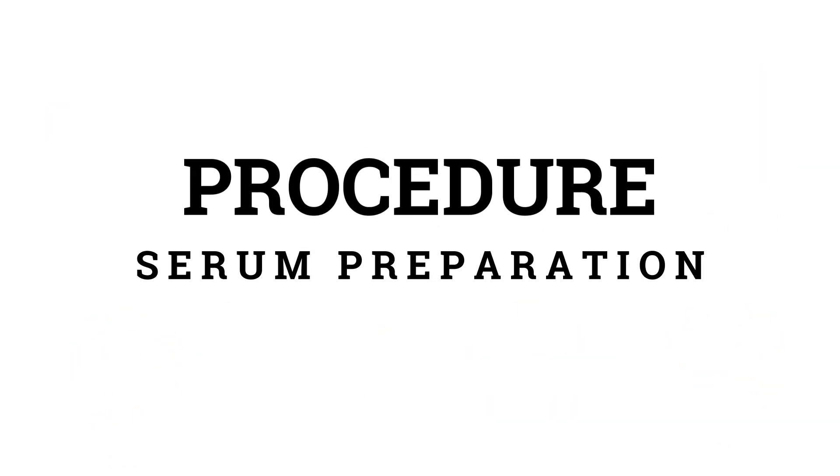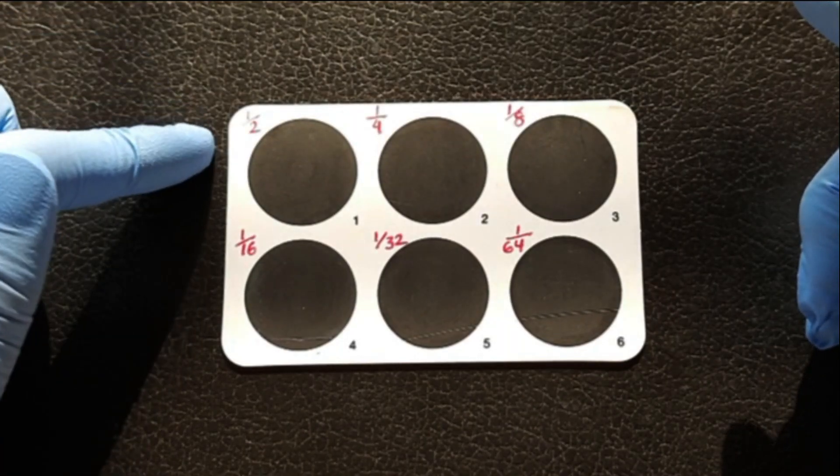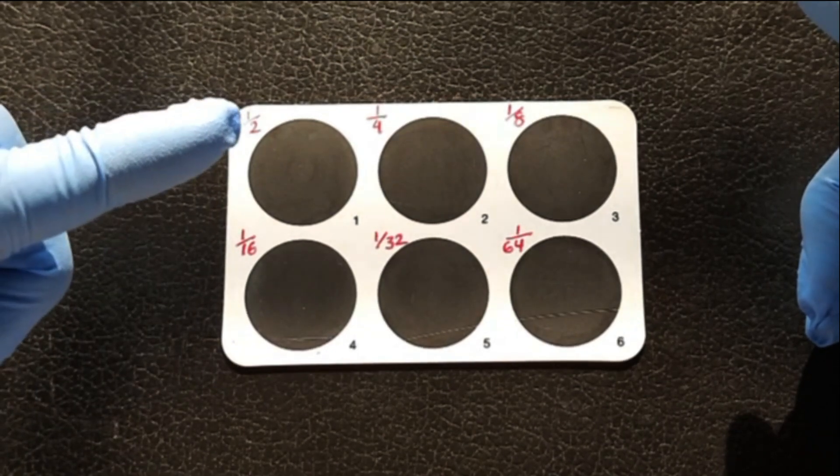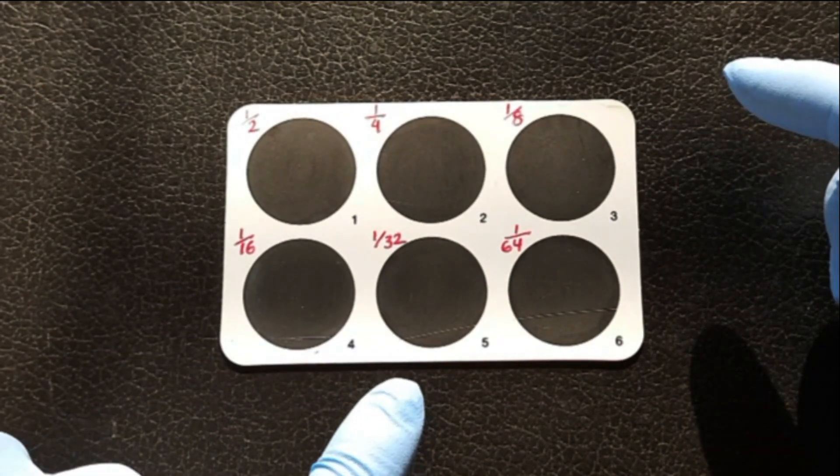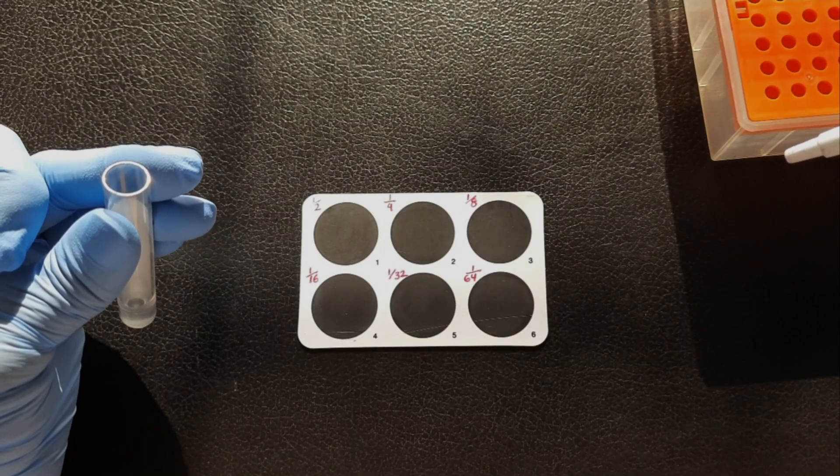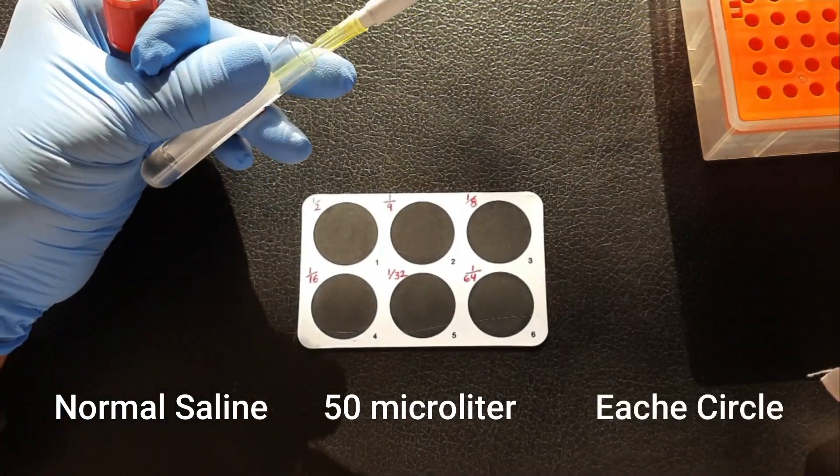To prepare the serial dilution of serum, first we will take a test card, having 6 circles, and label the circle 1 to 6 as 1 in 2, 1 in 4, 1 in 8, 1 in 16, 1 in 32, and 1 in 64. Now, you have to place 50 microliter of normal saline on each circle by a micro pipette.